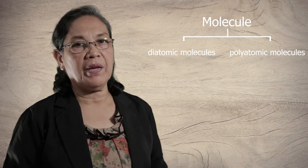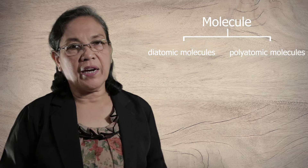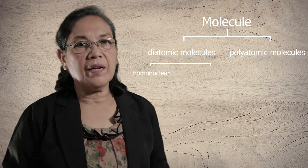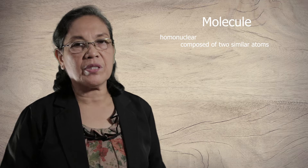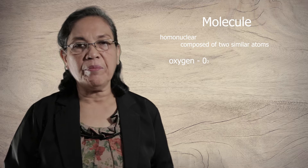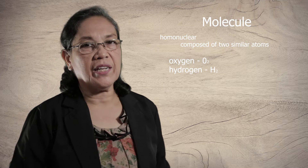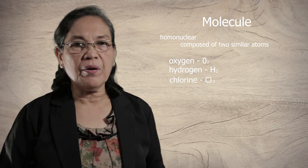For the diatomic molecule, there are also two types: the homonuclear diatomic molecule and the heteronuclear diatomic molecule. For the homonuclear diatomic molecules, these are composed of two similar atoms. For example, we have oxygen — its diatomic form is O2. Or hydrogen — its diatomic form is H2. We also have chlorine, Cl2, and bromine, Br2.